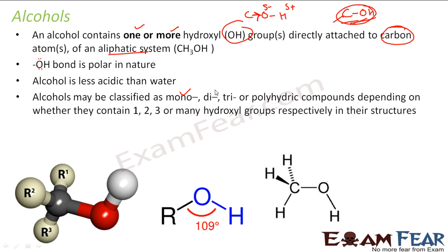Alcohols can be classified as monohydric, dihydric, trihydric or polyhydric compounds depending on whether they have one, two, three or more hydroxyl groups in their structure. We'll look at these in the next slide. The bond angle of alcohol is almost 109°, which we'll discuss — it's mainly due to the lone pairs on oxygen. There are three different views of the structure: a 3D view and two structural views.